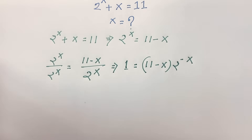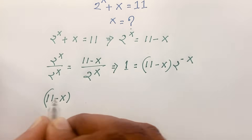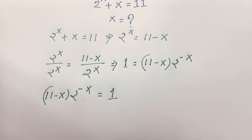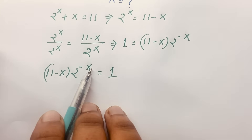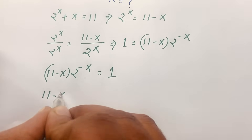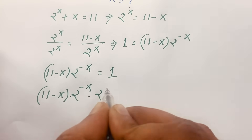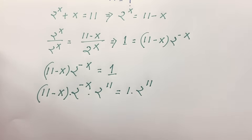We now have the equation: (11 minus x) times 2 to the power minus x is equal to 1. To use the Lambert W function, I multiply both sides by 2 to the power 11, giving (11 minus x) times 2 to the power minus x times 2 to the power 11 equals 2 to the power 11.